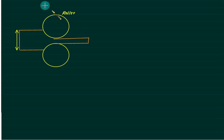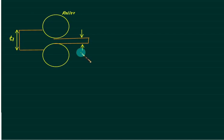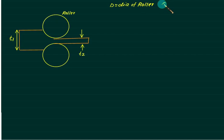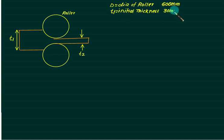Initial thickness is T1, the final thickness is T2 or Tf. T1 is initial thickness, T2 is final thickness, D is the diameter of roller. The roller is very large in diameter, usually 600 mm, while T1 is usually 30 mm. So compared to the roller diameter, the size of the plate is very, very small.